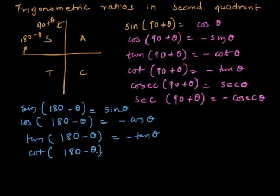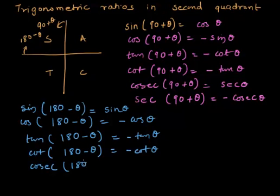Cot of 180 minus theta — cot remains cot. Because of the second quadrant, it is negative. Cosec of 180 minus theta — being in the second quadrant, cosec is positive, and because of 180 degrees, cosec remains cosec theta.